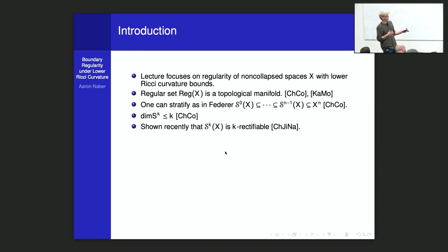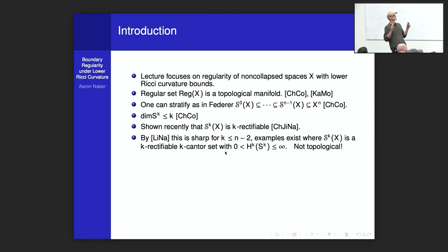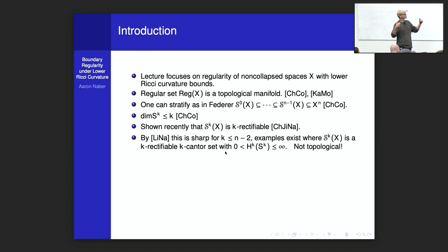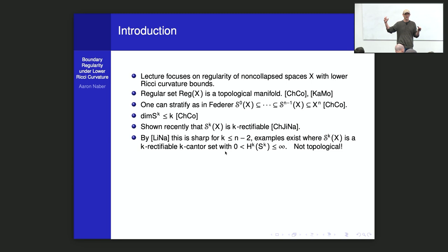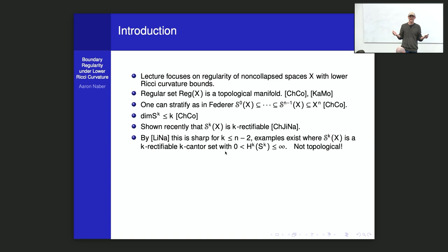More recently, these k-th strata — interpreted as the k-dimensional parts of our singular sets — are more than just k-dimensional: they are actually k-rectifiable. For k less than or equal to n minus two, this rectifiable condition is sharp. Rectifiable means it looks like a k-dimensional manifold away from a set of measure zero — you get charts from measurable subsets, not open subsets. Together with Nan Li, we built examples of singular sets that were both k-rectifiable and k-Cantor sets, so there is genuinely no topology in those cases.